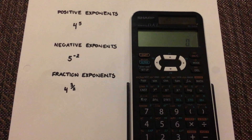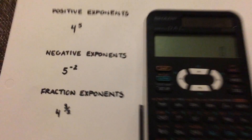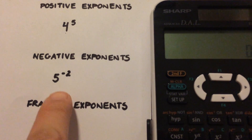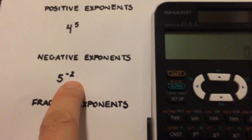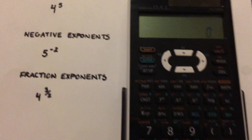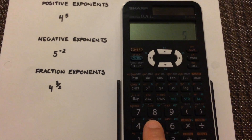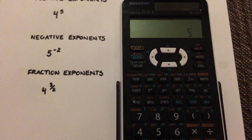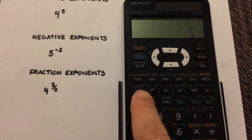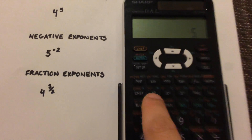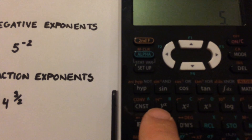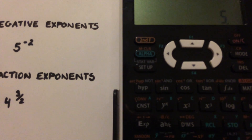Next, I'm going to show you how to enter negative exponents. So 5 with exponent negative 2. Select 5, then again you're going to select the y to the x.